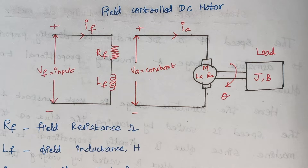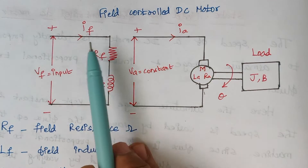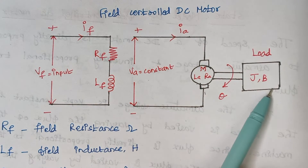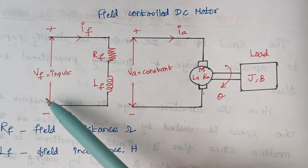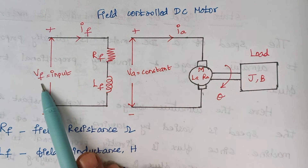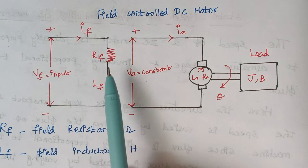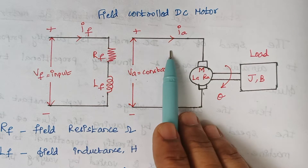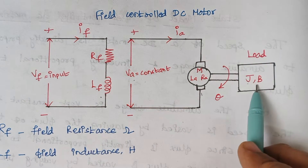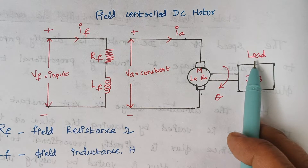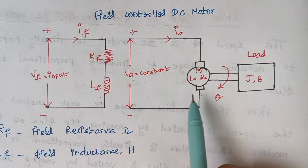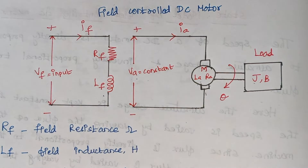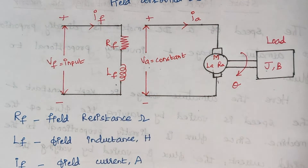This is the diagram of the field controlled DC motor. This part forms the field part (VF), this forms the armature part, and this contributes the load. VF is the field voltage, IF is the field current, RF is the field resistance, LF is the field inductance, VA is the armature voltage, IA is the armature current, and J and B contribute to the load. Theta is the rotational displacement, and LA and RA are also considered in the armature.